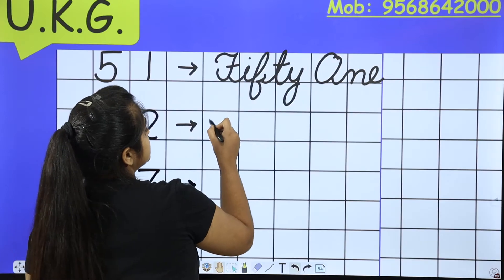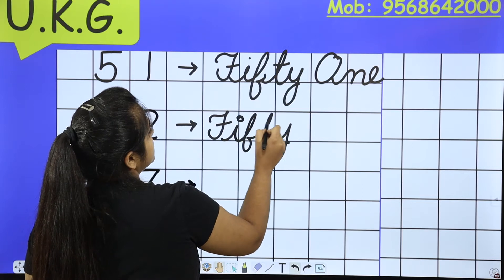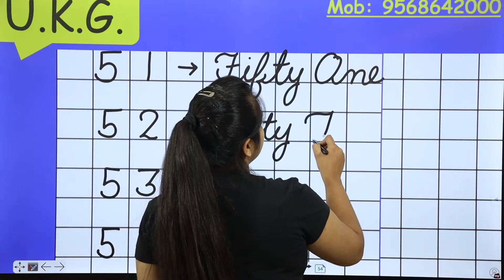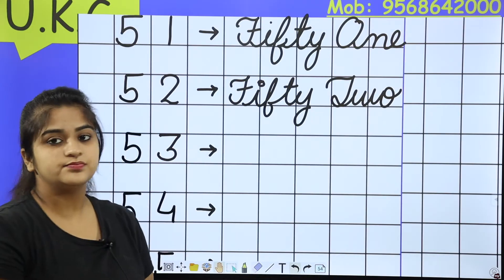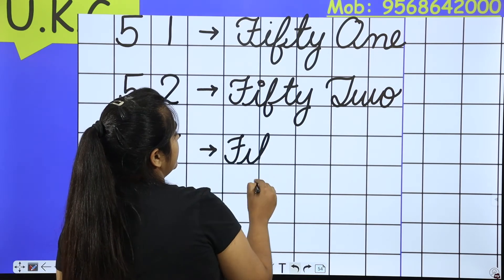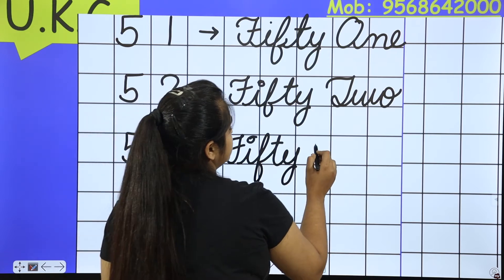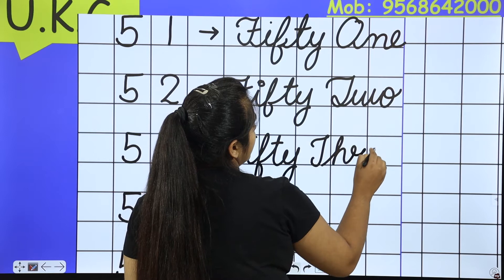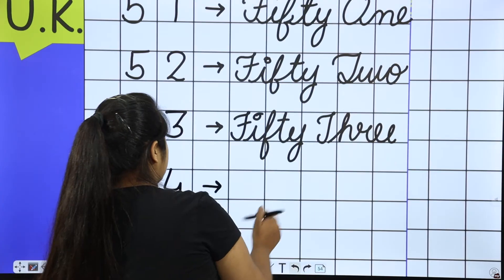Next is 52. F-I-F-T-Y, then T-W-O. So 52 is FIFTY TWO. Next is 53. F-I-F-T-Y, then T-H-R-E-E. What is the spelling of 53? FIFTY THREE.